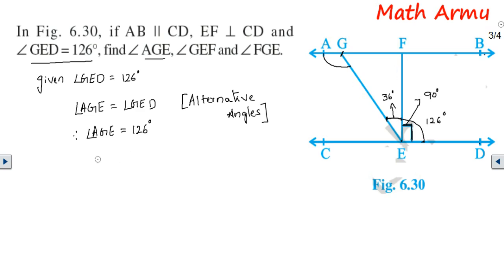It is 36. Angle GEF because we have calculated at the time of the beginning of the solution itself. Because we know that angle FED is right angle 90 degrees, obviously the remaining part would be 126 minus 90.